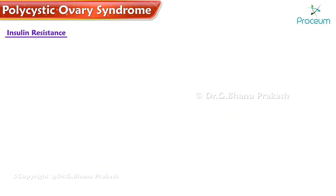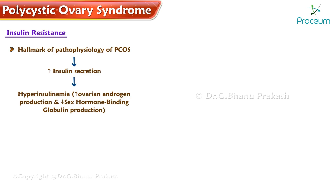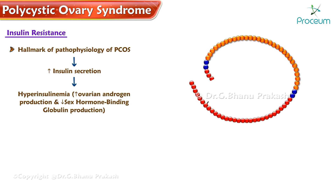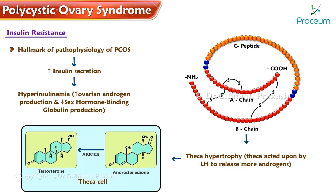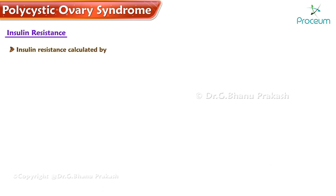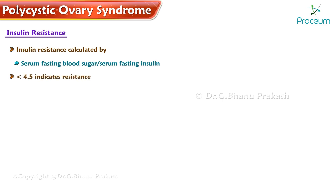Insulin resistance is the hallmark of the pathophysiology of polycystic ovary syndrome and is always associated with increased insulin secretion. Hyperinsulinemia causes increased ovarian androgen production and decreased sex hormone binding globulin production. Insulin also causes theca hypertrophy, and theca is then acted upon by luteinizing hormone to release more androgens. Insulin resistance is calculated by serum fasting blood sugar divided by serum fasting insulin; a value of less than 4.5 indicates resistance. Insulin resistance is manifested by obesity.